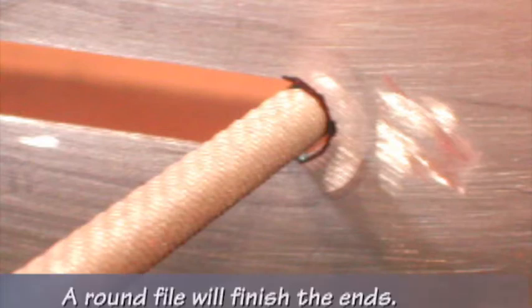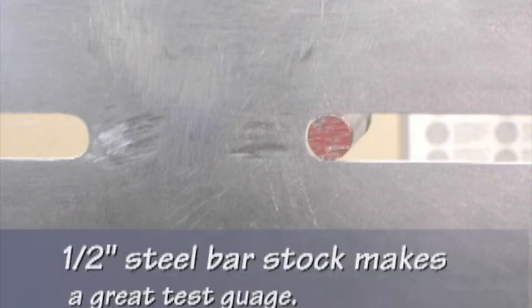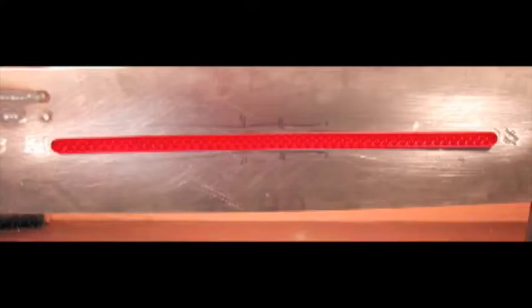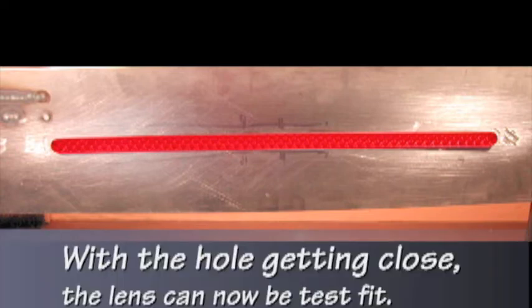A round file will finish the ends. Half-inch steel bar stock makes a great test gauge. With the hole getting close, the lens can now be test fit.